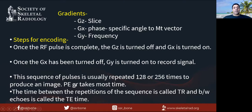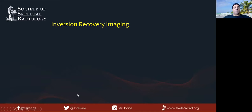The phase encoding gradient takes the most time. For a 3D image, you have two phase encoding gradients. The time between repetitions of the sequence is called the TR time, and the time between the echoes is called the echo time.